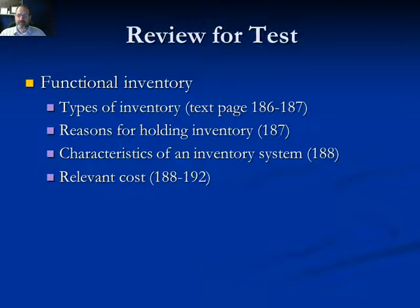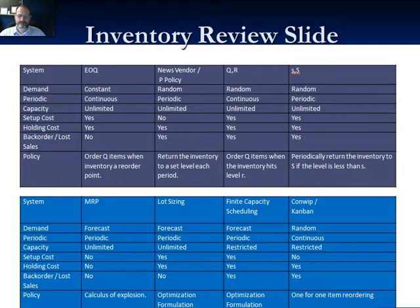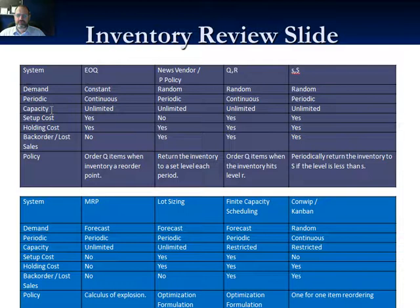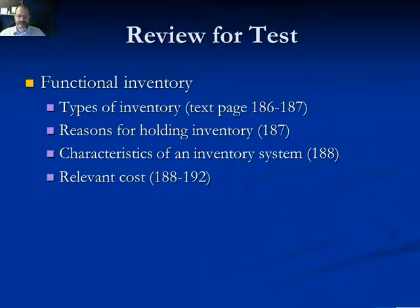Understand the characteristics of an inventory system as given in the first slide: the pattern of demand, whether it's continuously or periodically reviewed, whether it's capacity restricted, setup cost, holding cost, and backorder cost, and how the policy is implemented. Understand the relevant costs of inventory — why does it cost money to hold inventory? The time value of money and cost of capital, storage cost, depreciation or deterioration of the item's quality, and the risk of obsolescence.